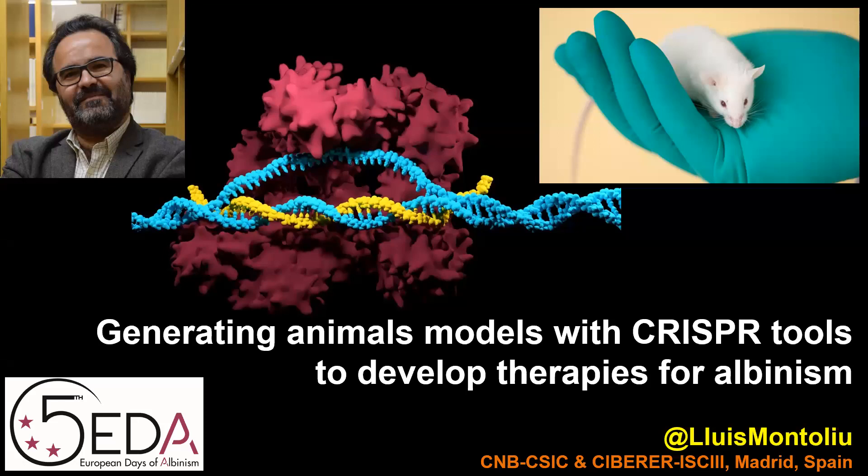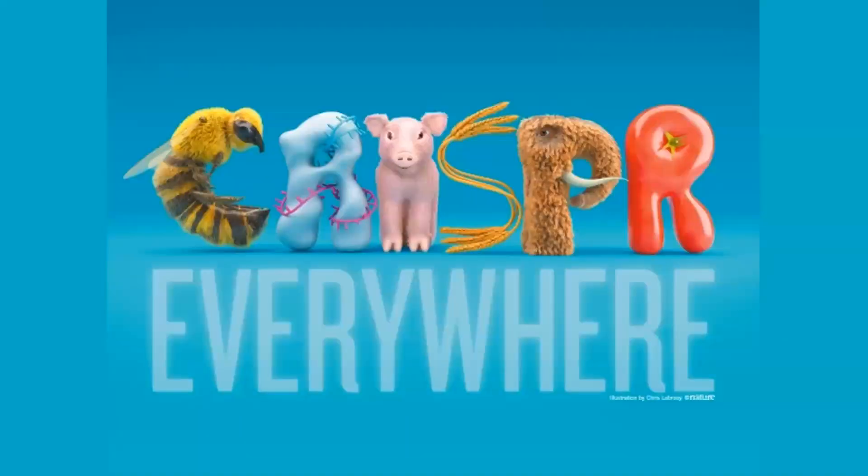Hello, my name is Lluís Montoliu and I work at the National Center for Biotechnology. Today I would like to present this talk about generating animal models with CRISPR tools to develop therapies for albinism.